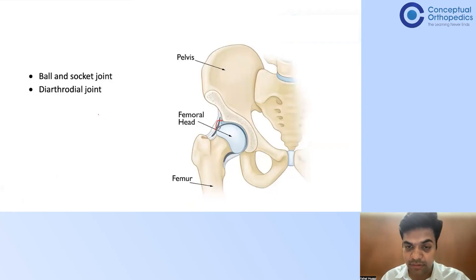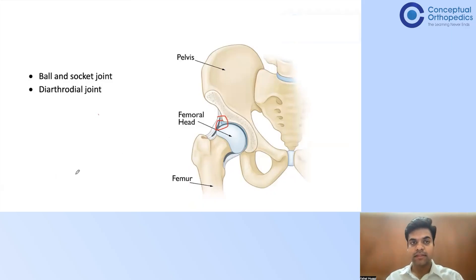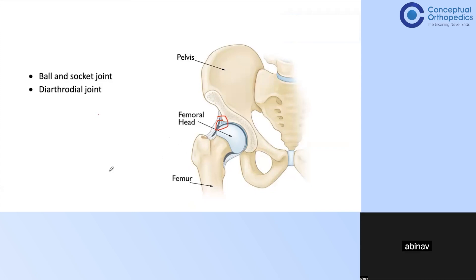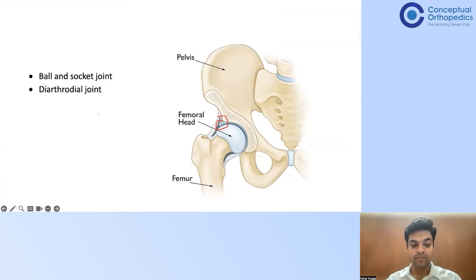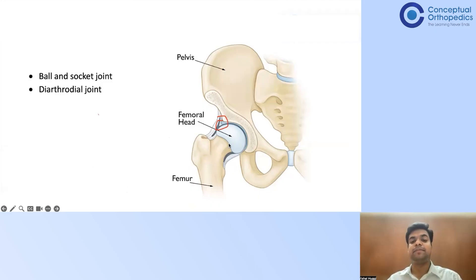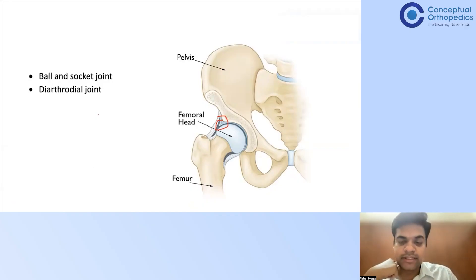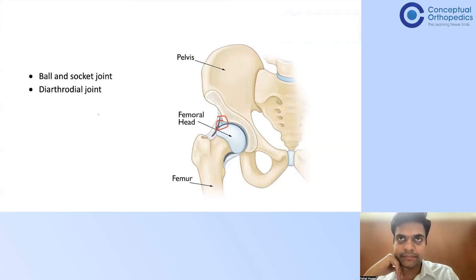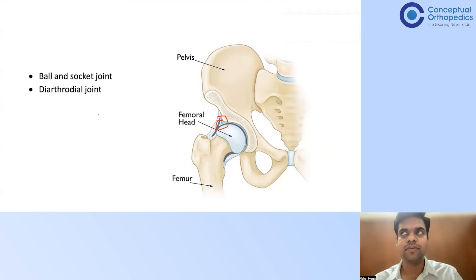Apart from the ligaments, there is another important structure — the labrum. What is the importance of the labrum? It increases the surface area of contact and deepens the cup. The labrum is very important, especially in cases of posterior dislocation of the hip joint. If the hip is unstable — for example, an unstable posterior dislocation — what are the things you look for?